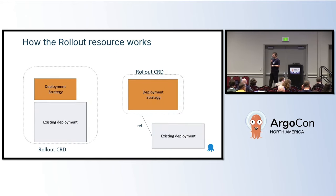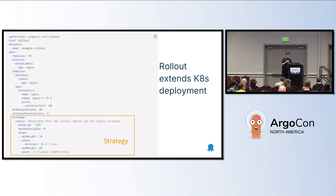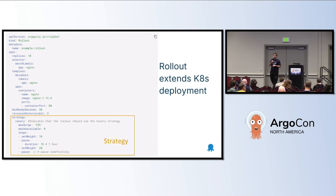Argo Rollouts offers a new way to define your deployments. Either you take an existing Kubernetes deployment and extend it, or you create a rollout and reference another deployment. The file you're looking at is a typical Kubernetes deployment, but it's a rollout — not a deployment. Most of the fields are exactly the same as a deployment, and there is a brand new field called strategy, which in this case says: do a canary and start with 10% of the traffic, then pause.